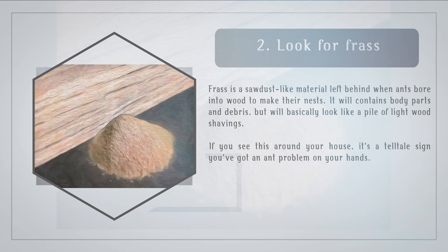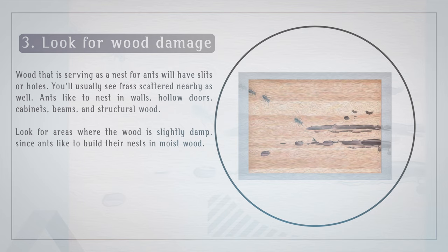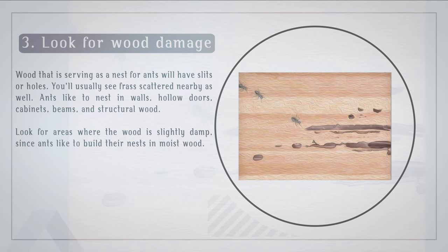Step 3: Look for wood damage. Wood that is serving as a nest for ants will have slits or holes, and you'll usually see frass scattered nearby as well. Ants like to nest in walls, hollow doors, cabinets, beams, and structural wood. Look for areas where the wood is slightly damp, since ants like to build their nests in moist wood.